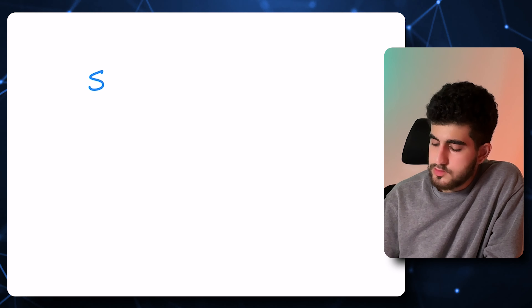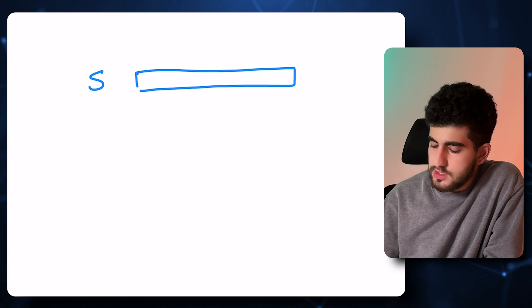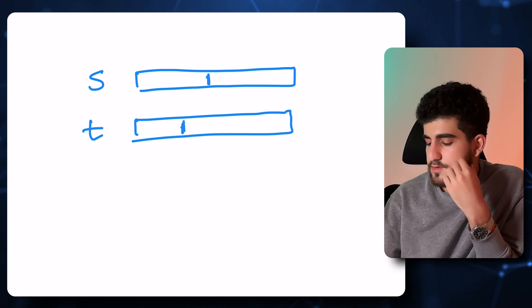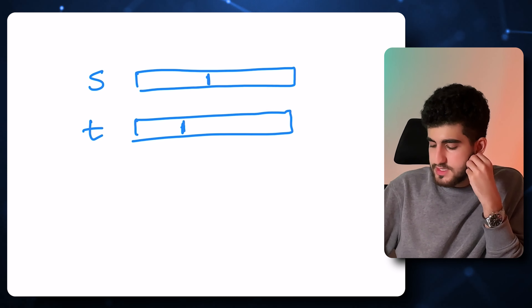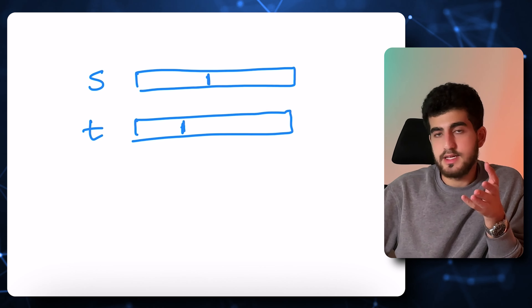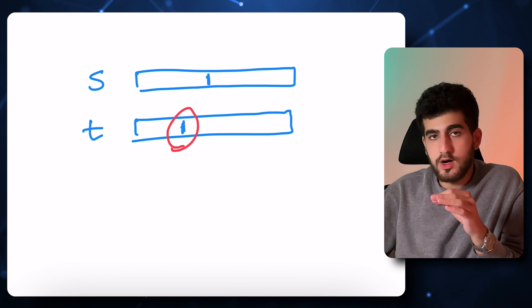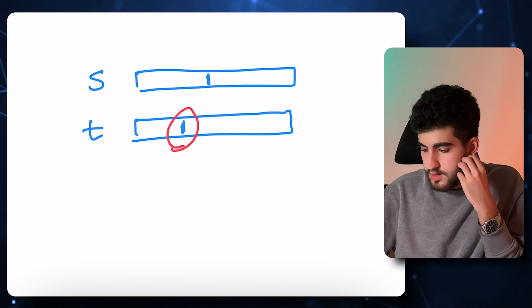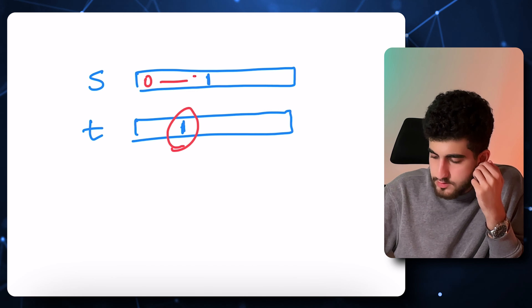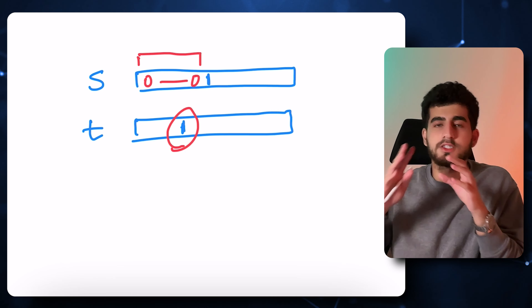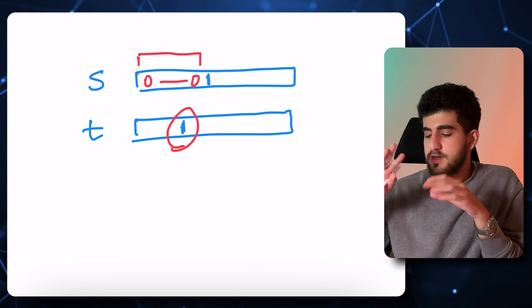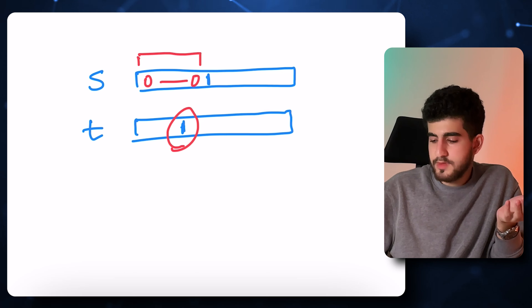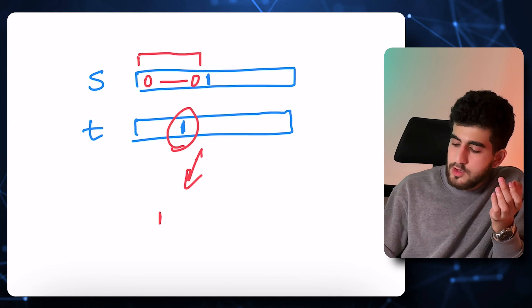In problem B, we want to turn s into t. If we consider the first place that s is 1 and the first place that t is 1, I can say that if the first place that t is 1 comes sooner than the first place that s is 1, then the answer is definitely no — it is impossible. Because in that prefix of zeros, there's no way to turn one of them into 1, therefore they always remain 0.